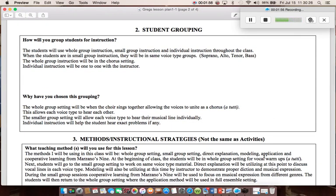The student grouping section: how will I group the students for instructions? The students will use whole group instruction, small group instruction, and individual instruction throughout the class. When the students are in small group instructions, they will be in same voice type groups: soprano, alto, tenor, and bass. The whole group instruction will be in a chorus setting. The individual instruction will be one-on-one with the instructor.